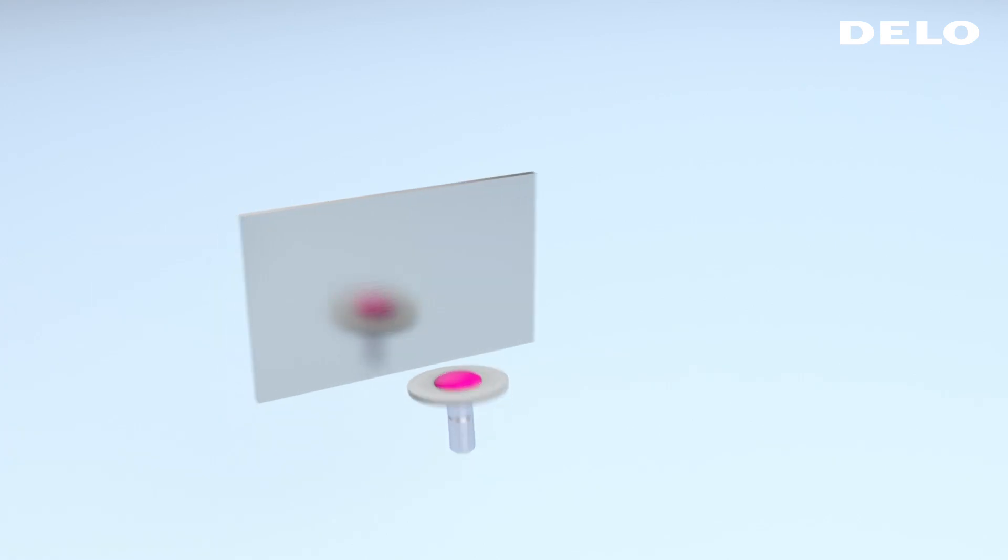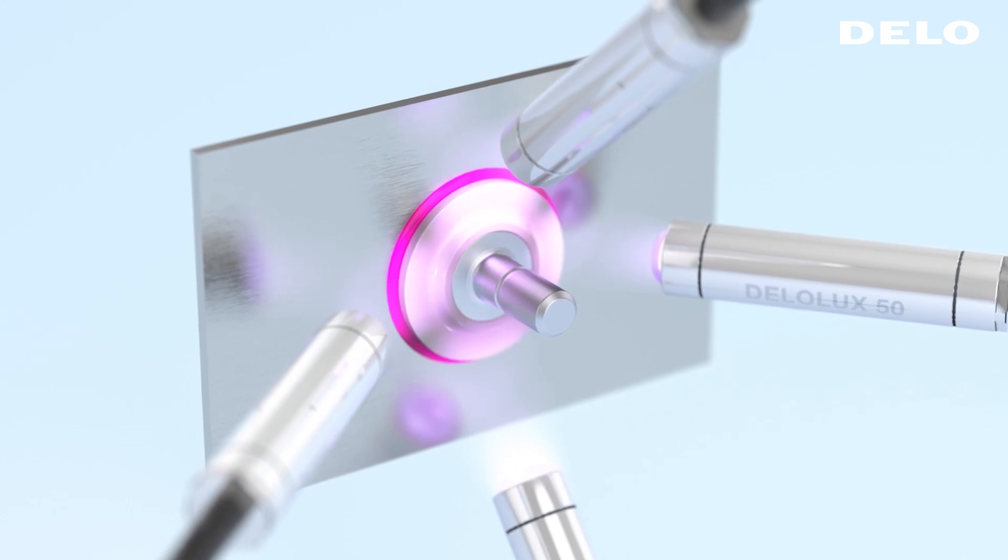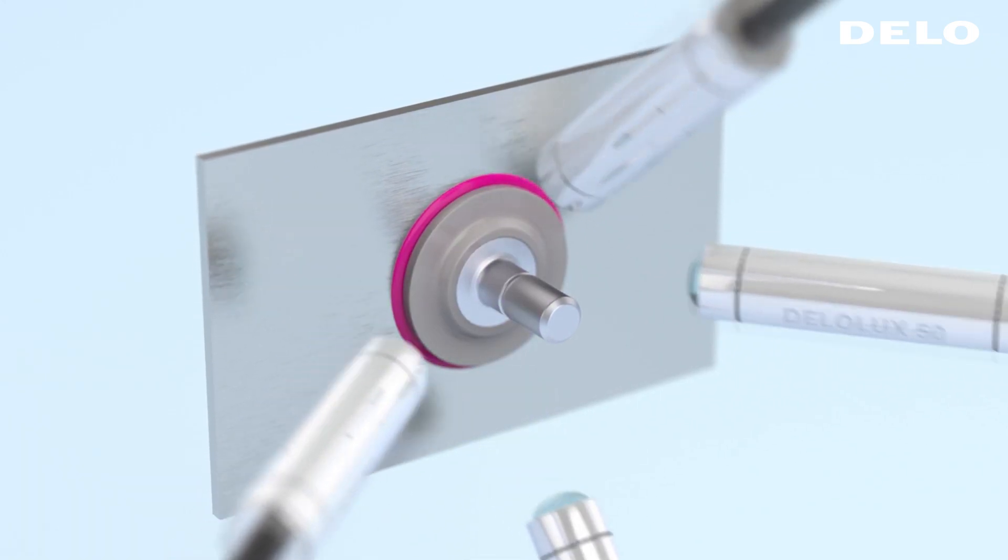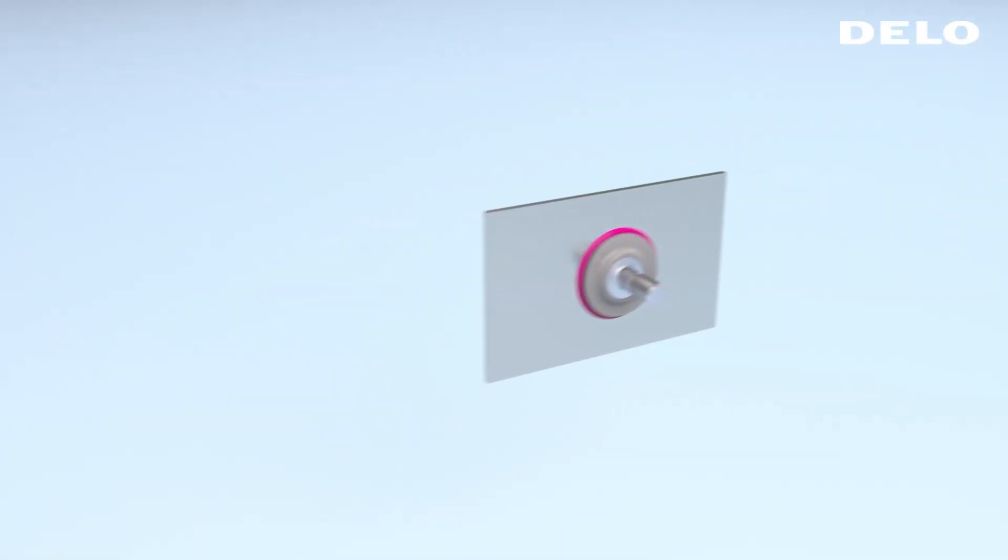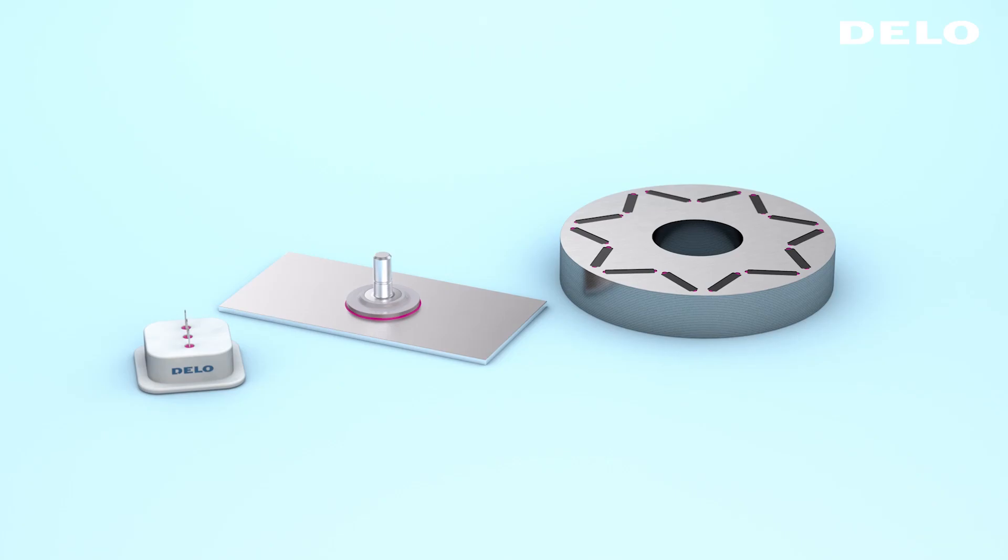When both parts are joined a small fillet forms as the adhesive is squeezed out. This fillet is cured with UV light so that both parts are kept in place. Now the module is easy to handle on the assembly line without further fixation aids.